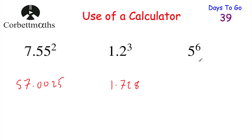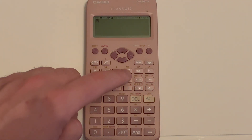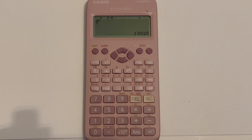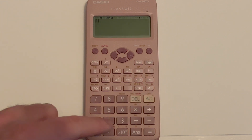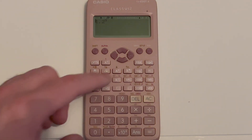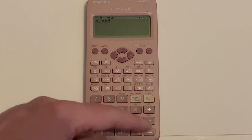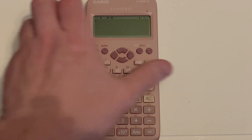Next, can you work out five to the power of six? Make sure you know where the power button is. On this calculator, press 5, then the power button — the X with a little square above it — then press 6 and equals to get 15,625. Note that you can use this same power button for cubes and squares too: for the cube you press the base, then the power button, then type 3; for squared, type 2. So that's the power button, the squared button, and the cube button.